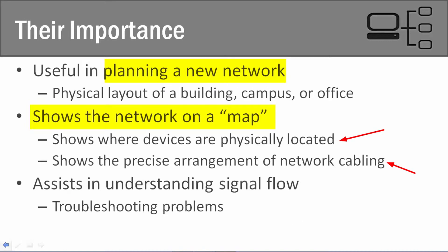When you know how everything is connected together on a physical map and understand the design, you understand how data and information flows throughout the network. When troubleshooting, it's easier to identify potential problems and isolate them. This is why it's important — we need a network map once the network is designed, we need to understand all our constraints and resources, and when we hand the network off to system administrators, network support, and desktop support personnel, it's important for them to have this information so they can easily troubleshoot their issues.